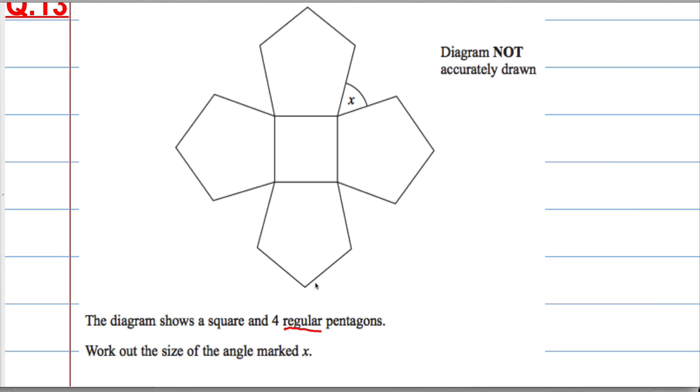Work out the size of the angle marked X. Before we go ahead with that, I'm going to fill this information in here. I know that that's 90 degrees, and I would like to know this angle here in blue and that angle there in blue. Then if I add up the two blue angles and the red angle and take it away from 180, that should give me X.